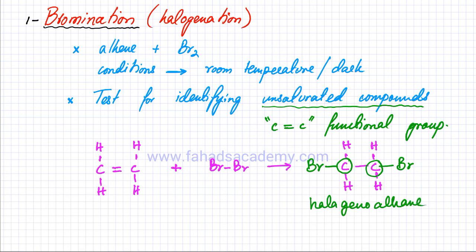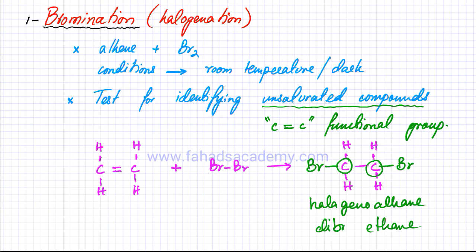A haloalkane is simply an alkane which has halogens as substituent groups. The name of this molecule — since it's ethane as the base — is going to be ethane. It has two bromine branches, so it's dibromoethane. One bromine is on carbon number one, the other on carbon number two — so the full name is 1,2-dibromoethane.